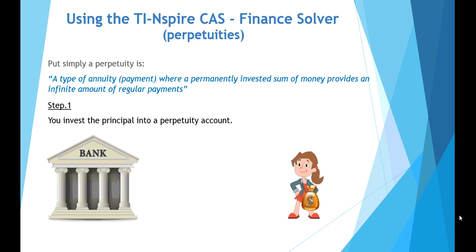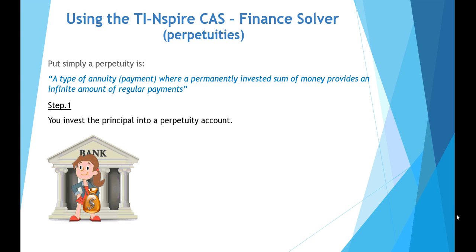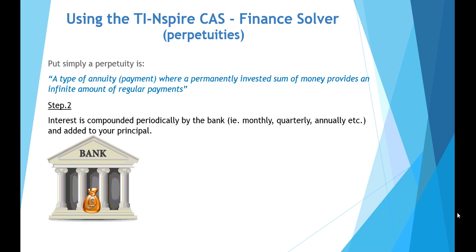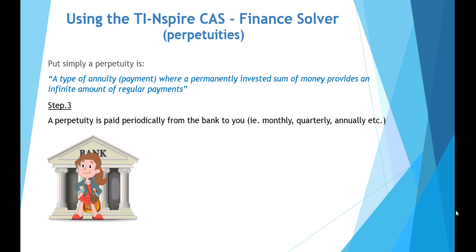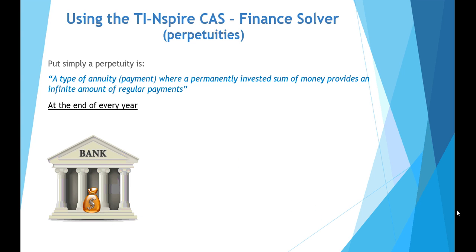In a perpetuity, a person invests money into an account and the bank returns interest periodically — it could be monthly, quarterly, or annually — so your principal increases in size. Then periodically a perpetuity payment is made back to you as the investor. At the end of every year the interest compounded into your principal equals the perpetuity payment being paid back to the investor.